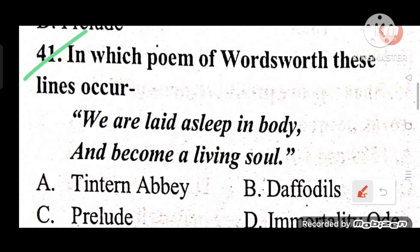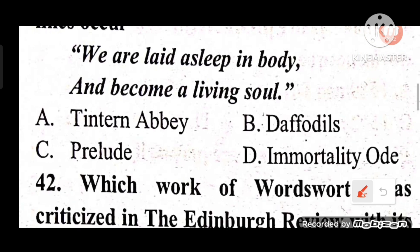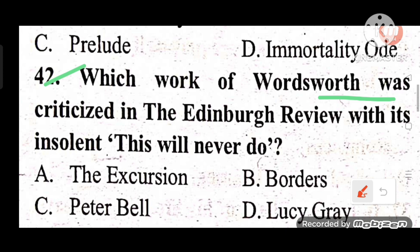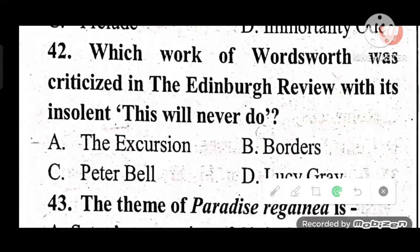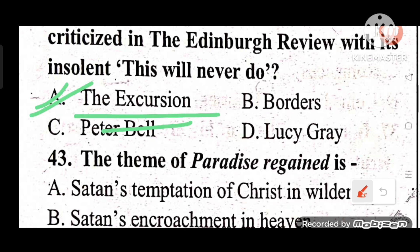Question 41: In which poem of Wordsworth do these lines occur — 'We are laid asleep in body, and become a living soul'? The answer is A — these lines are from Wordsworth's famous poem 'Tintern Abbey.' Question 42: Which work of Wordsworth was criticized in the Edinburgh Review with the words 'This will never do'? Options: The Excursion, Borderers, Peter Bell, Lucy. The answer is A — The Excursion was criticized in the Edinburgh Review.